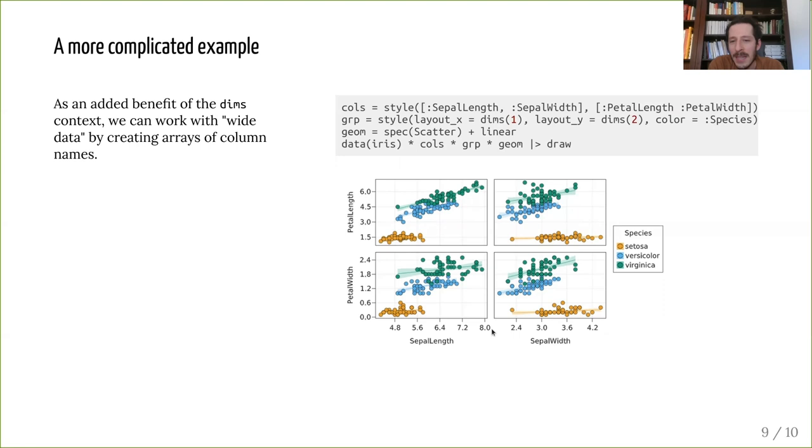which I can then broadcast and then say that, for example, the layout on the x-axis will be the first dimension of this array, and then the layout on the y-axis will be the second dimension. And now when I plot it, it will first do the data context and then finish the plot based on the array, giving me this nice somewhat non-standard wide data facet plot.